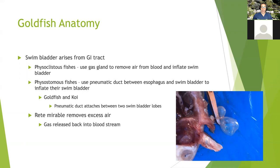Both types of fish have what's known as a rete mirabile, which is used to take extra air out of the swim bladder. It works similarly to the gas gland in reverse — taking gas from the swim bladder and pushing it back into the bloodstream through a very dense network of capillaries, somewhat like how our lungs work. Nitrogen and other gases are found in the swim bladder depending on the species.